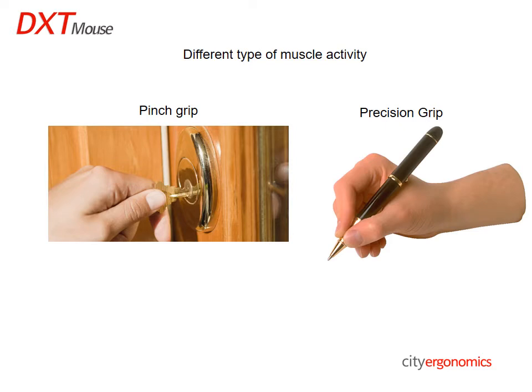The third and cardinal difference between power and precision grips is that there is very little power generated in the precision grip at all. Pinch grip is a form of power grip — it involves the extrinsic muscles, static muscle activity, and a lot of muscle power. The precision grip involves the intrinsic muscles, dynamic muscle activity, and little muscle power.